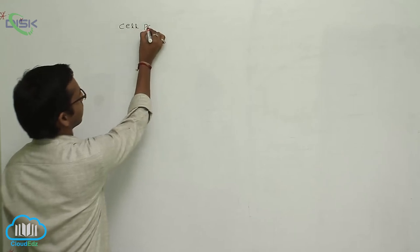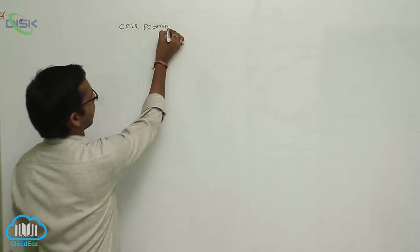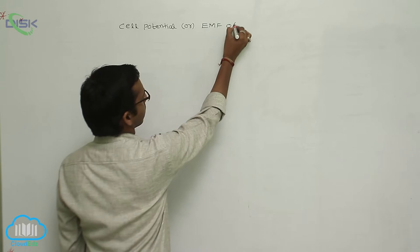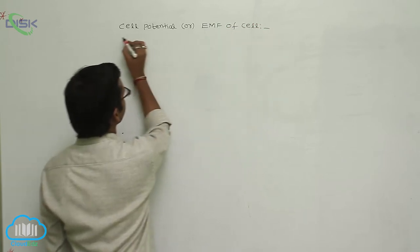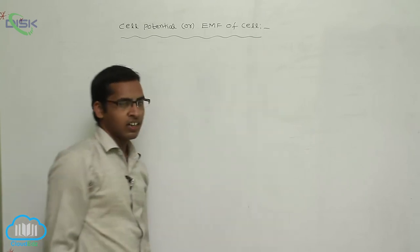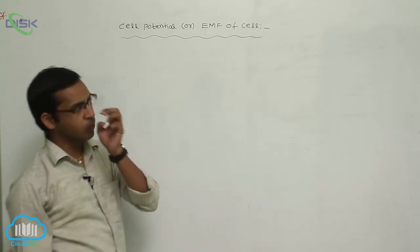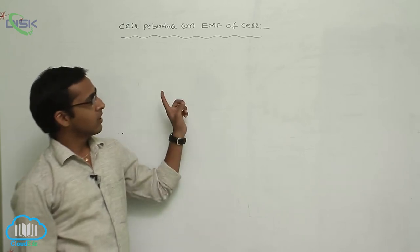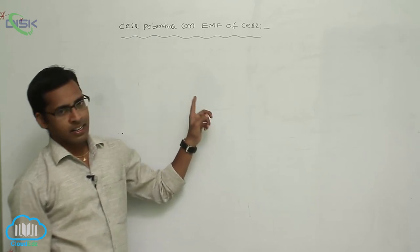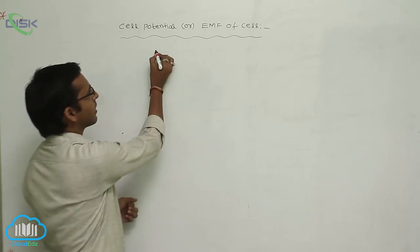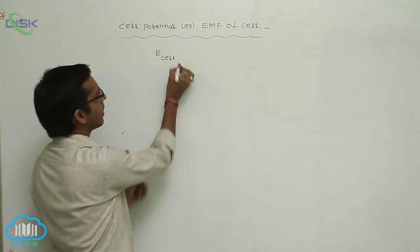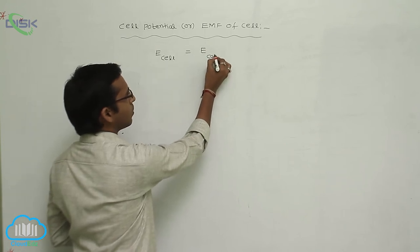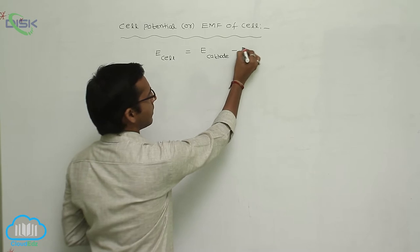Cell potential or EMF of cell. Generally the galvanic cell contains two electrodes: one is cathode, another one is anode. The cathode acts as a reduction potential, and the anode acts as an oxidation process. Using this, we can calculate E cell or cell potential, which equals E cathode minus E anode.